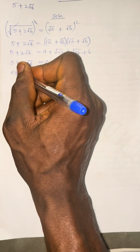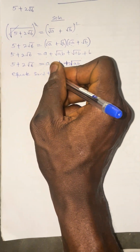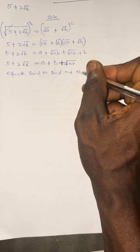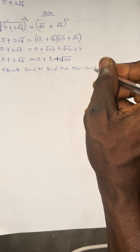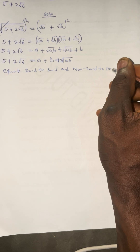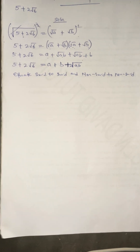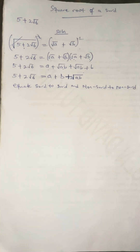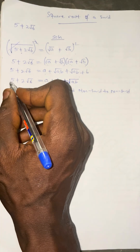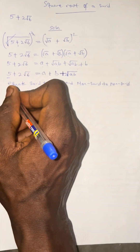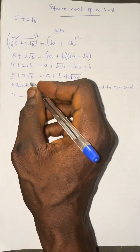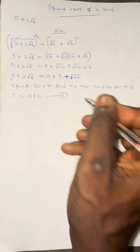Now equate surd to surd and non-surd to non-surd. Surd means those with square root; non-surd means those without square root. Equating the non-surd parts: 5 equals A plus B. This is equation 1.